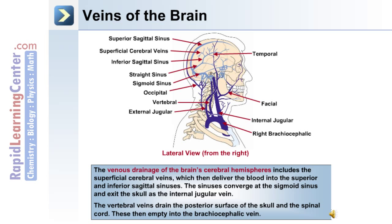The venous drainage of the brain's cerebral hemispheres includes the superficial cerebral veins, which then deliver the blood into the superior and inferior sagittal sinuses. The sinuses converge at the sigmoid sinus, and they exit the skull as the internal jugular vein. The vertebral vein drains the posterior surface of the skull and the spinal cord, and these then empty into the brachiocephalic vein.